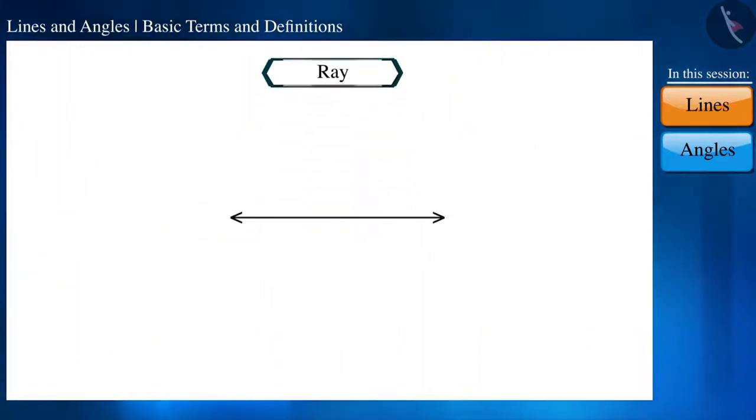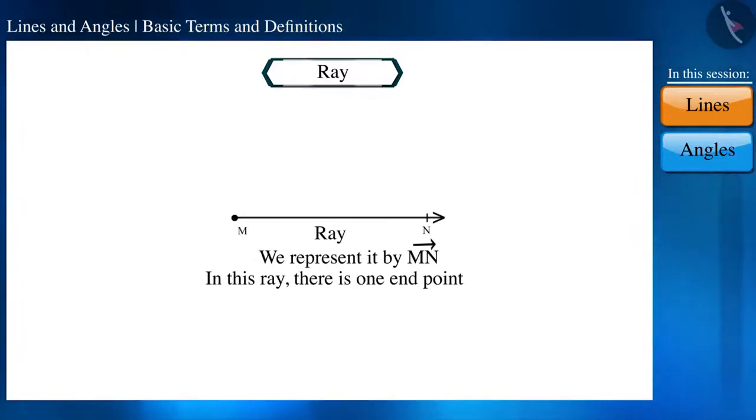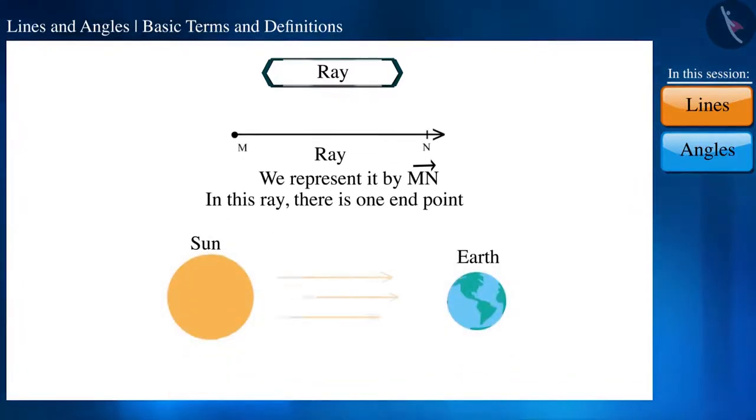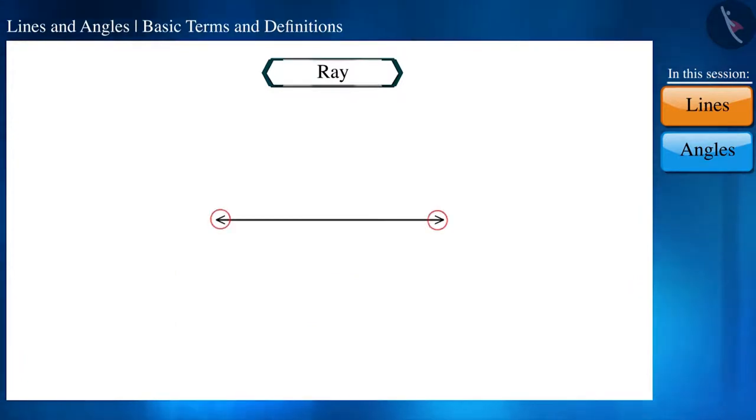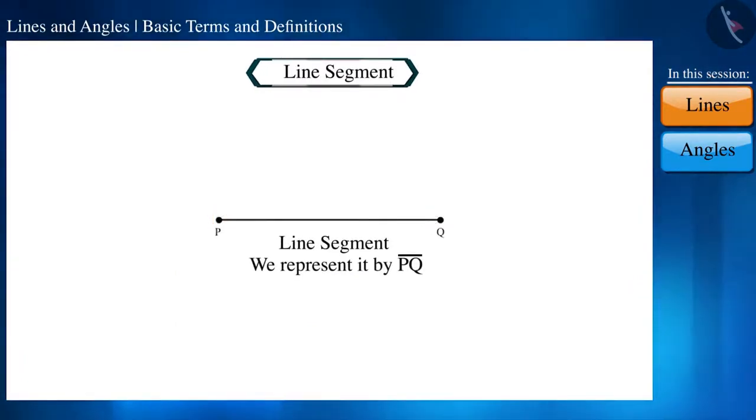Now friends, what will happen if we represent one end of a line by a point? We will not call it a line but a ray. We call the light coming from the sun a ray because the source of origin is fixed. If we represent both ends by points, then this is a line segment.